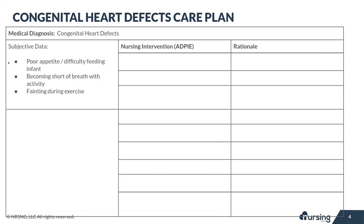The subjective data associated with congenital heart defects are primarily poor feeding, becoming short of breath with exercise and activity, and possibly even fainting during exercise. Poor feeding is primarily associated with infants, while shortness of breath and fainting are more likely to be seen in older children.